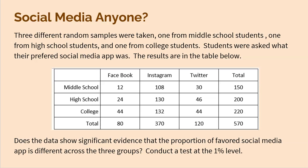Now does the data show significant evidence that the proportion of favorite social media app is different across the three groups? And again, that's another reason why this is a test for homogeneity, because we're trying to see if there's a difference between the three preferences or if it's the same. And we want to conduct a test at the one percent level. All right, so I really want to show you in this video how the calculator is going to get the chi-squared value and the p-value really quickly, but I also want to run through all four steps.